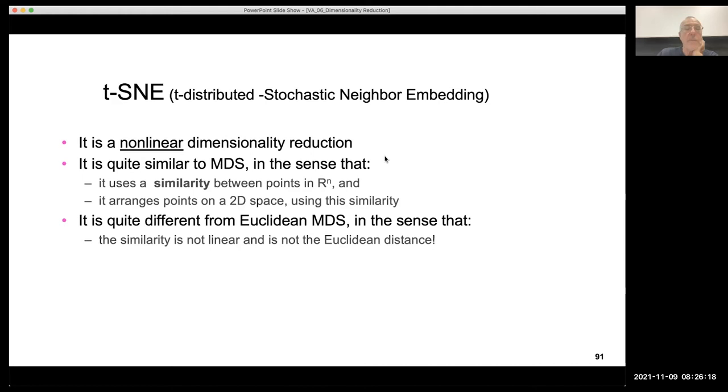It is somehow similar to MDS in the sense that you have a similarity between points in the multidimensional space, exactly like MDS, and these points are arranged on a bidimensional space using this similarity. The procedure is the same, but the definition of similarity in t-SNE is not Euclidean distance. It is predefined, but it's not linear, and it's not exactly the Euclidean distance.